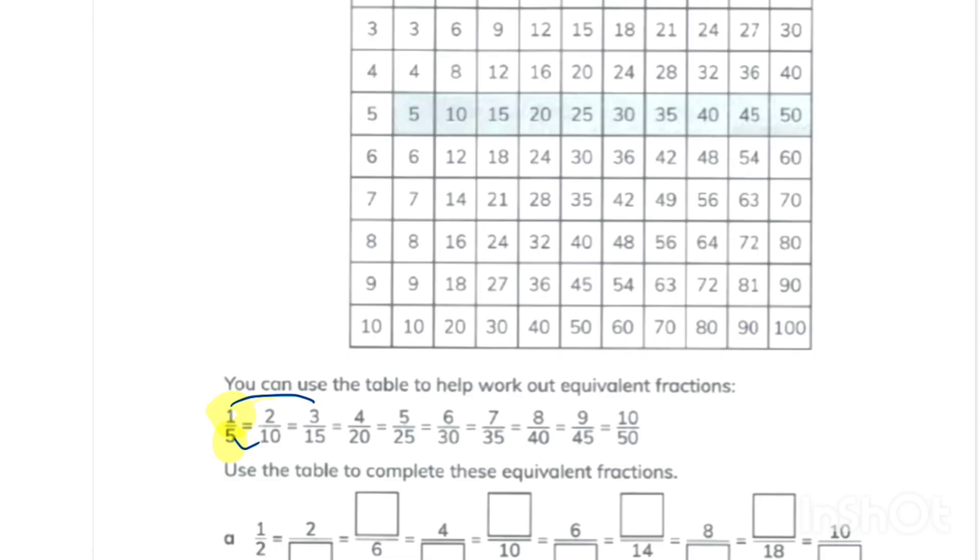Similarly when multiplied by 3 times, 3 times 1 is 3 and 3 times 5 is 15. When we multiply a fraction with the same number, the result is always equal to the previous fraction. Let's move to our actual question.